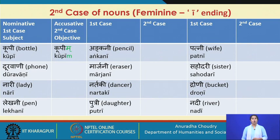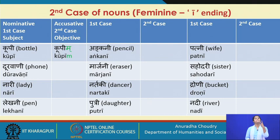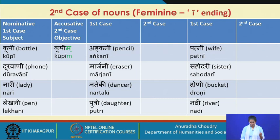Moving on to the long ī ending: koopi → koopim, dooravani → dooravanim, nari → nareem, lekhani → lekhanim, marjani → marjanim, nartaki meaning dancer → nartakim, putri → putrim, patni → patnim, sahodari → sahodarim, droni → dronim, nadi → nadeem.